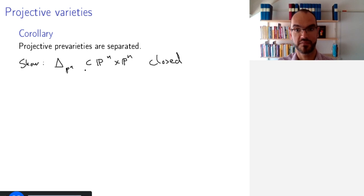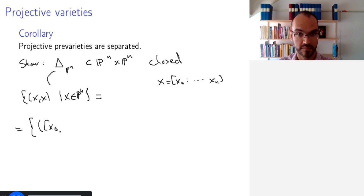So we need to show that projective space is separated. And so what is this set of all x, x with x in P^n? And so one way to describe it if we write x as the point x_0 to x_n, is that this is the set of pairs of points x_0 to x_n, y_0 to y_n.